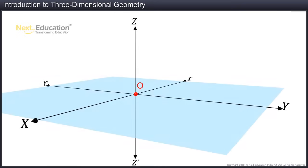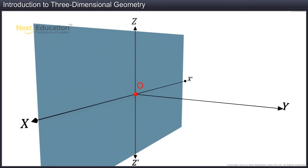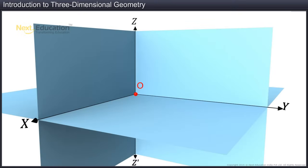The plane formed by the x and y-axis is called the x-y plane. Similarly, the plane formed by the y and z-axis is called the y-z plane. And the plane formed by the z and x-axis is called the z-x plane. The x-y plane, y-z plane, and z-x plane divide space into eight octants.